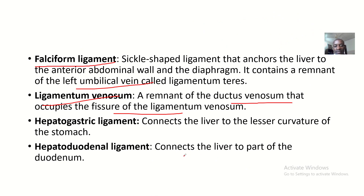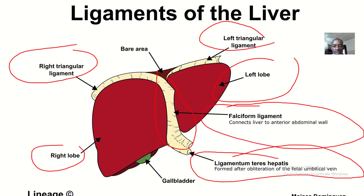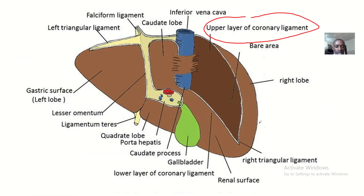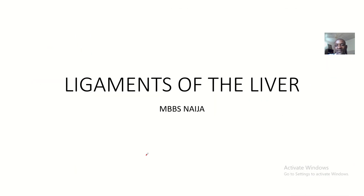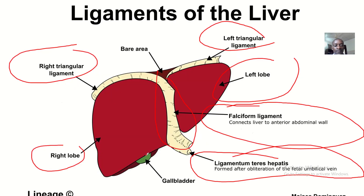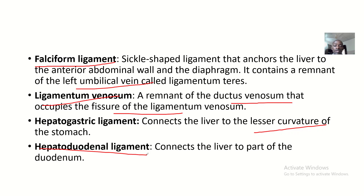Next we have the hepatogastric ligament, which connects the liver to the lesser curvature of the stomach. It is also not shown on our pictures, so whenever you get a model of the liver, try to find where the hepatogastric ligament is. The hepatoduodenal ligament, just like the name implies, connects the liver to part of the duodenum. That covers all six ligaments of the liver — we'll be developing mnemonics for remembering them. See you guys in the next one!